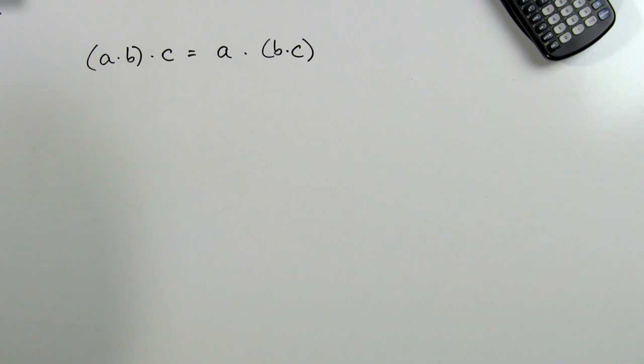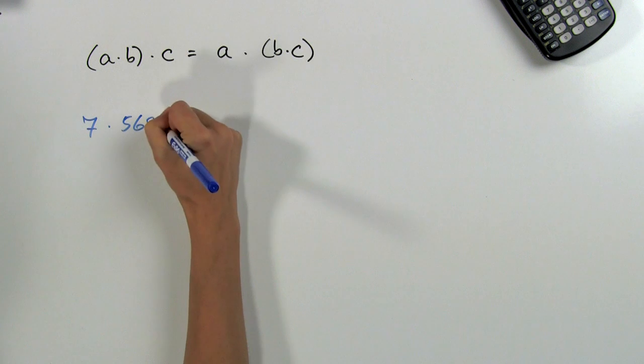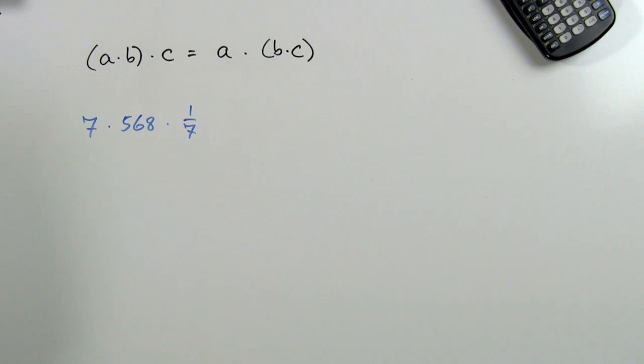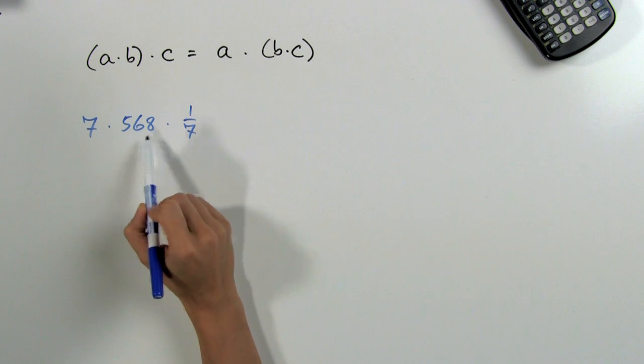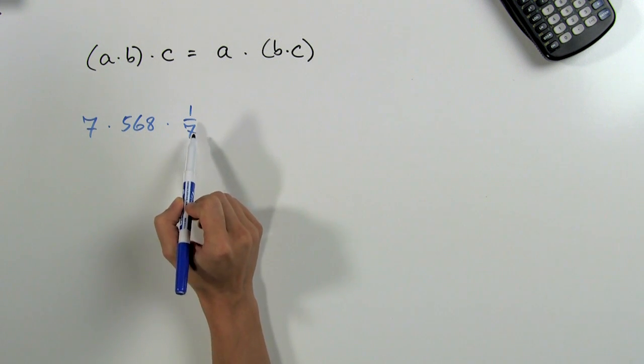Another example of how the associative property of multiplication can help us simplify is when we are multiplying numbers that are long or hard to multiply. For example, suppose we need to simplify 7 × 568 × (1/7). We would normally go ahead and multiply 7 × 568, and then multiply by 1/7, following our order of operations.